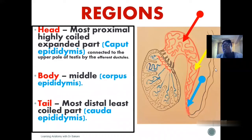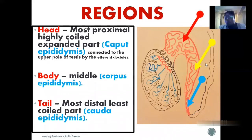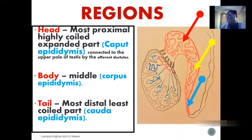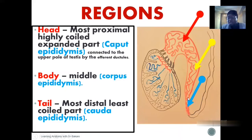The tail region of the epididymis becomes continuous with the vas deferens. So we have three regions of the epididymis, and these three regions are continuous with one another, which is how the sperm is able to move from one region to the other.